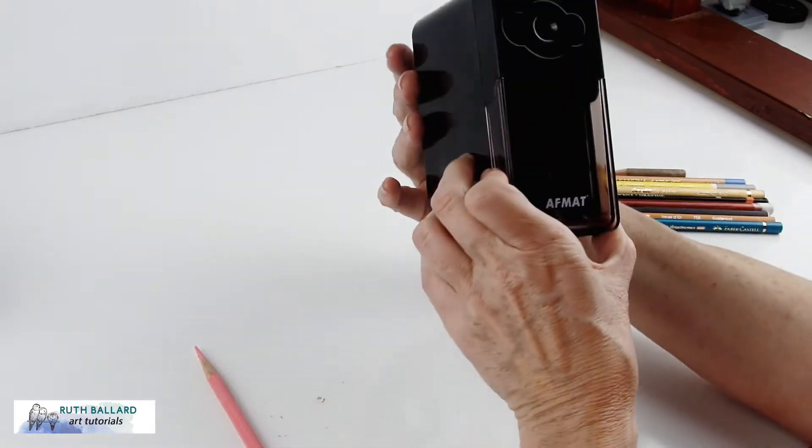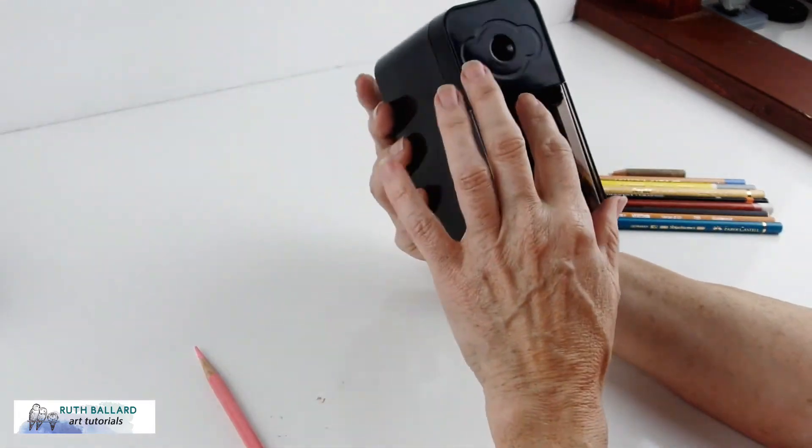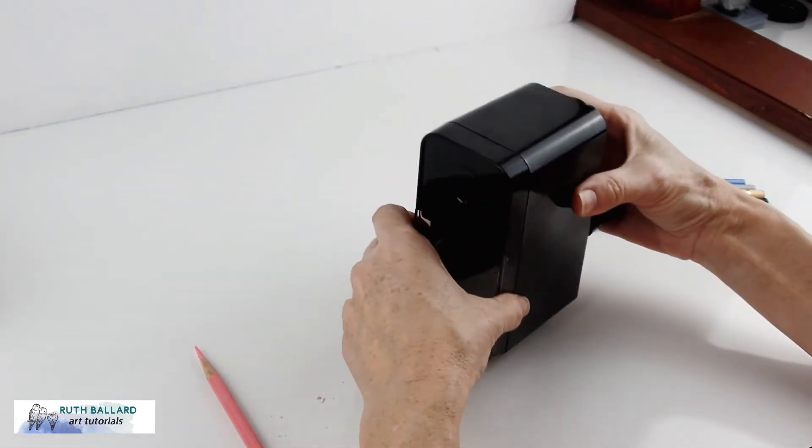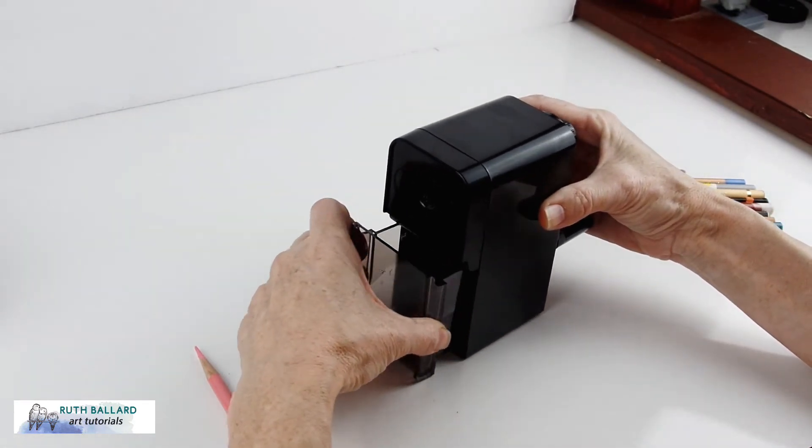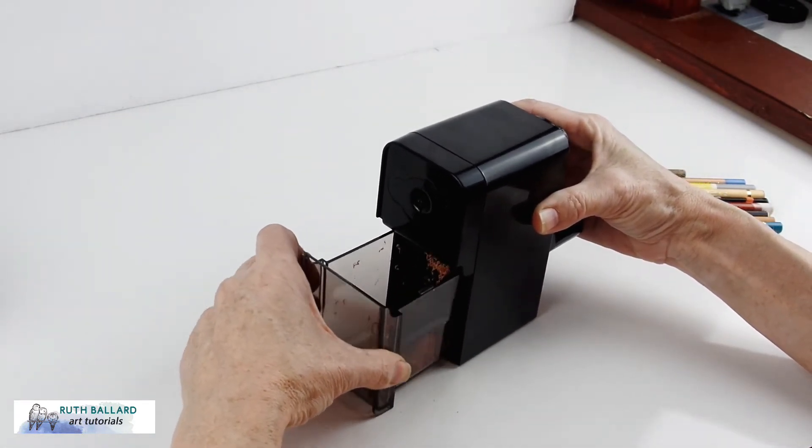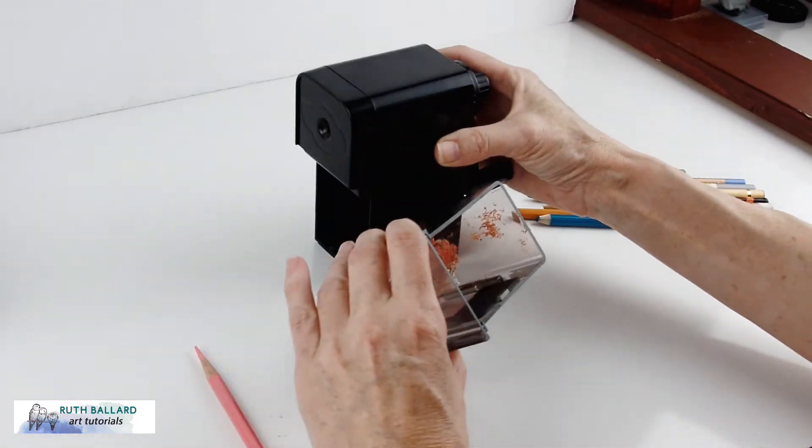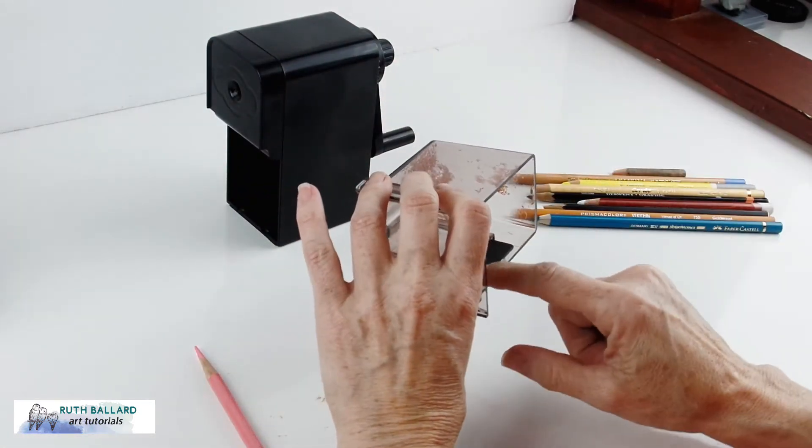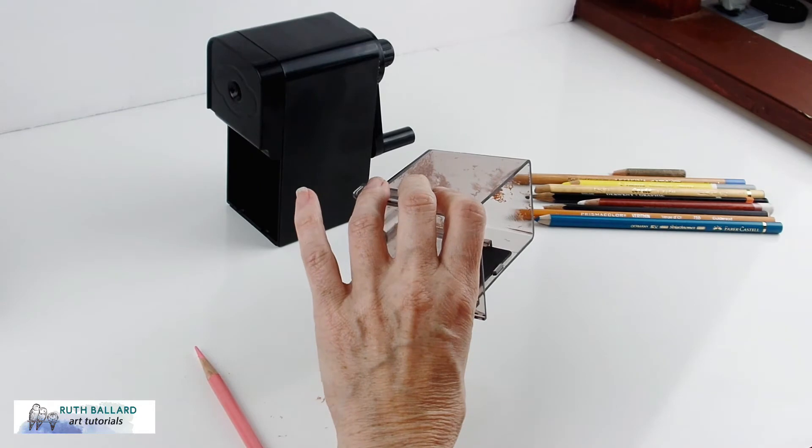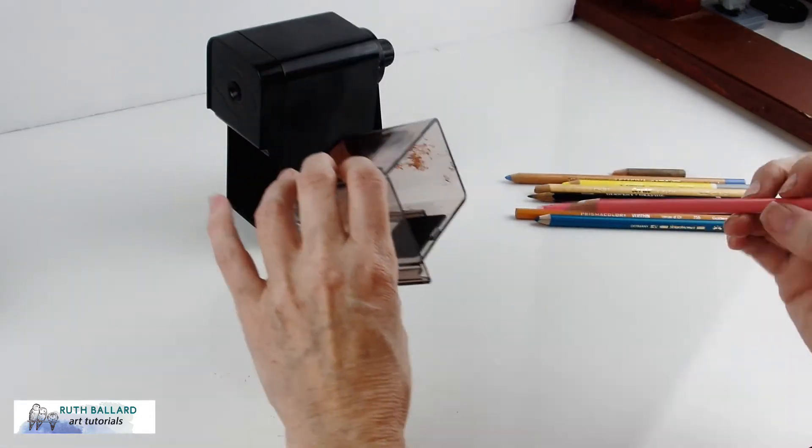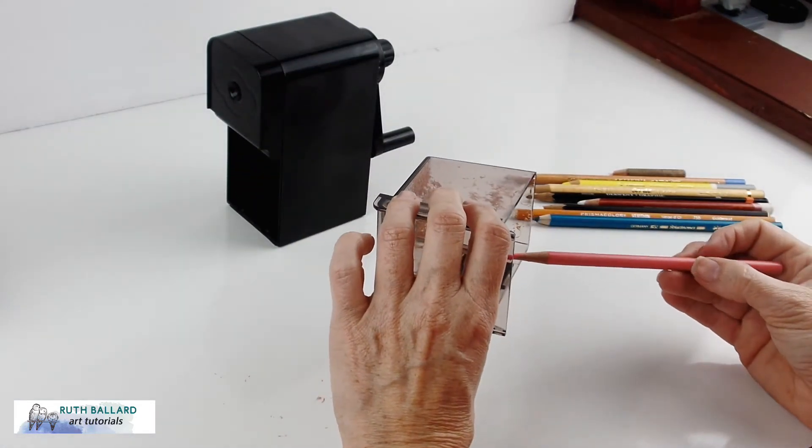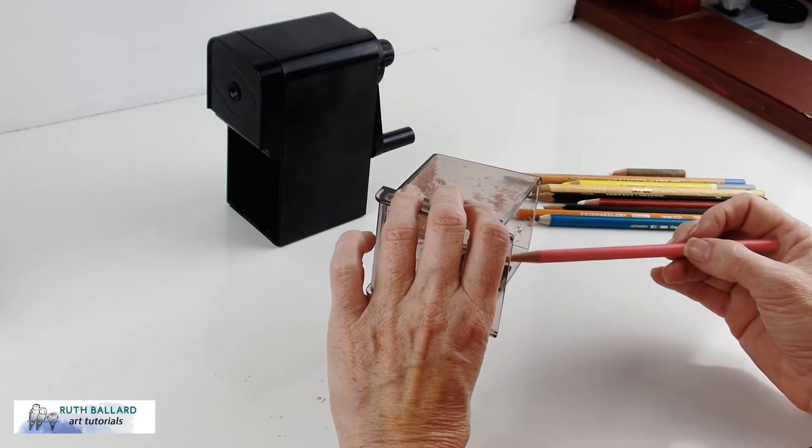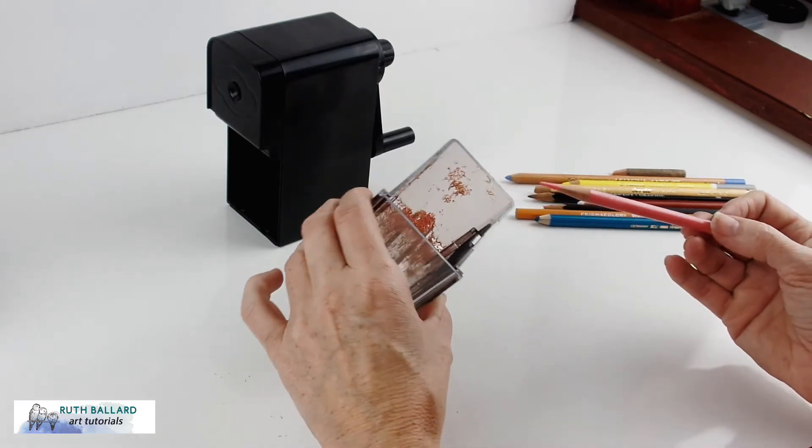The housing in here is very large for the shavings, and it removes fairly easily. Once you pull it out completely, you'll notice that there's a piece of sandpaper here, so if you like your pencils really sharp you can use this little piece of sandpaper in here.